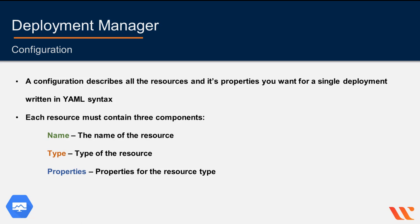The type, which is the type of the resource being deployed, such as compute.v1.instance. The base resource types are described and listed in the documentation. And then you have properties, which are the parameters for that specific resource type. They must match the properties for the type, and there are some required properties.